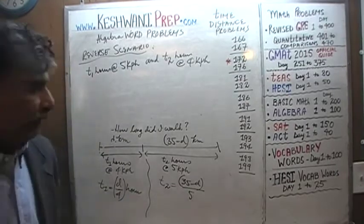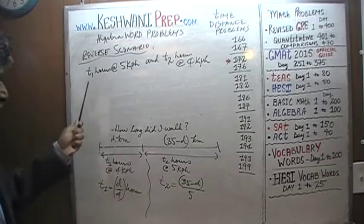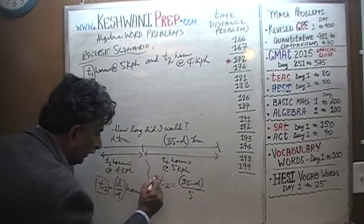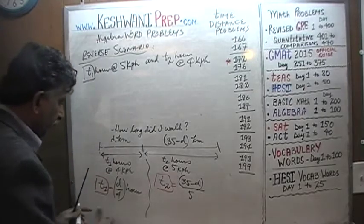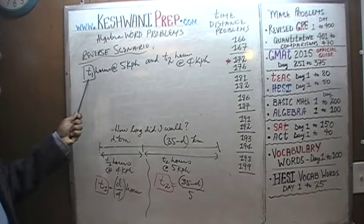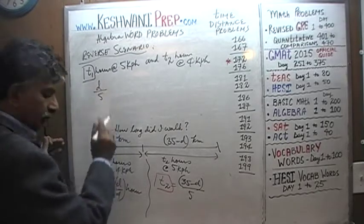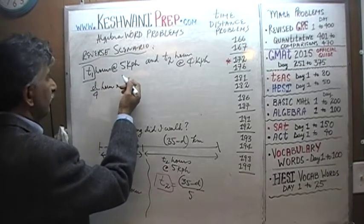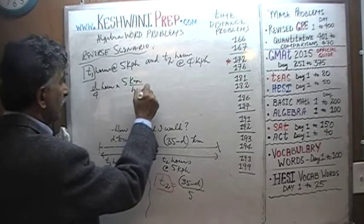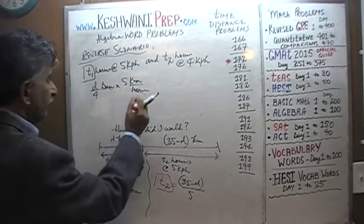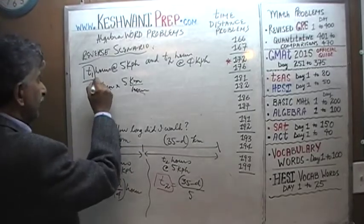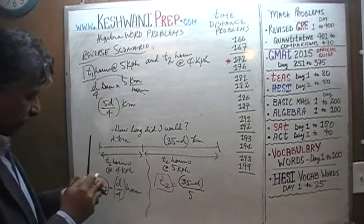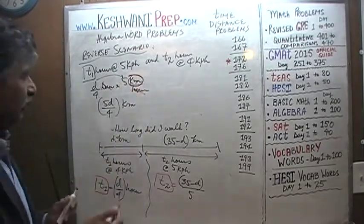Let's figure out how much distance we cover. Going t1 hours at 5 km/h, where t1 = d/4: that gives us (d/4) × 5 = 5d/4 kilometers. The unit of hours drops out and we're left with 5d/4 kilometers.